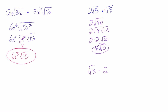Let's try another: if I had 3 root 3 times 2, in this case 3 times 2 is 6. We only have one root, so think of the other as root 1. So we have 6 in front, and root 3 times root 1 is just root 3. Our final answer is 6 root 3. So it works pretty easily when multiplying and dividing — just multiply the front numbers, multiply the roots, or divide the same way.